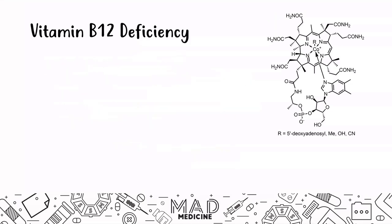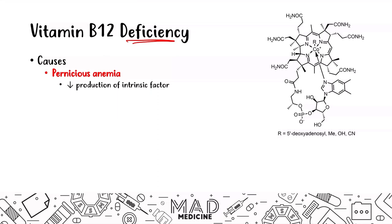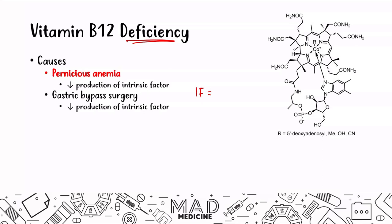When it comes to vitamin B12 deficiency, it can be caused by several reasons. Pernicious anemia is a very important cause where you have decreased production of intrinsic factor. Intrinsic factor is important for vitamin B12 to be absorbed in the gut. Gastric bypass surgery can also lead to decreased production of intrinsic factor because intrinsic factor is produced in the stomach. If you have gastric bypass surgery, you will not be producing as much intrinsic factor, leading to decreased vitamin B12 absorption in the ileum.